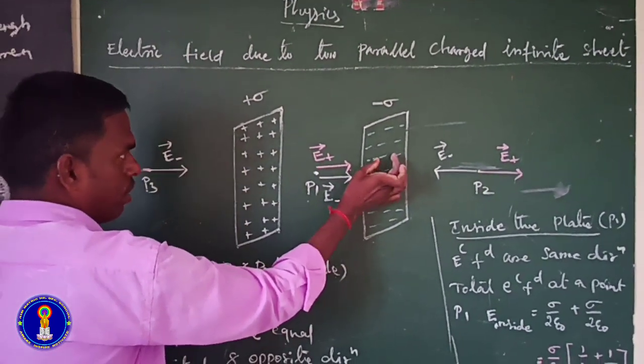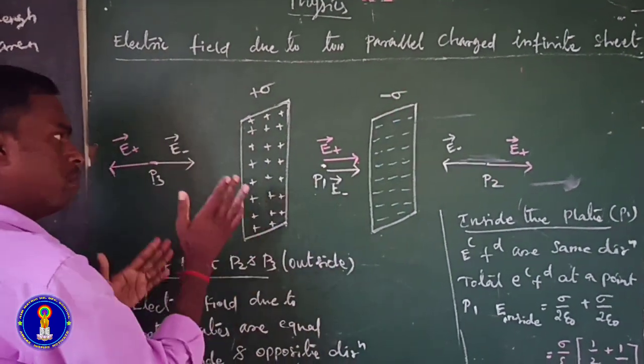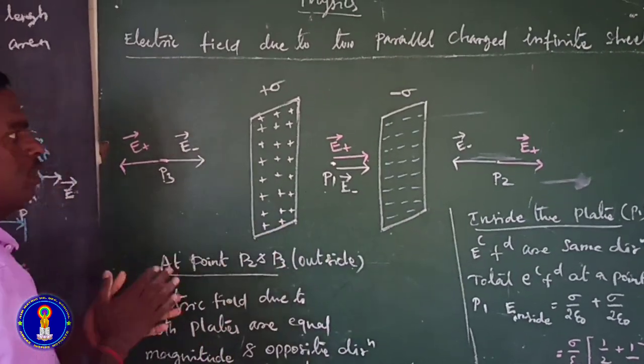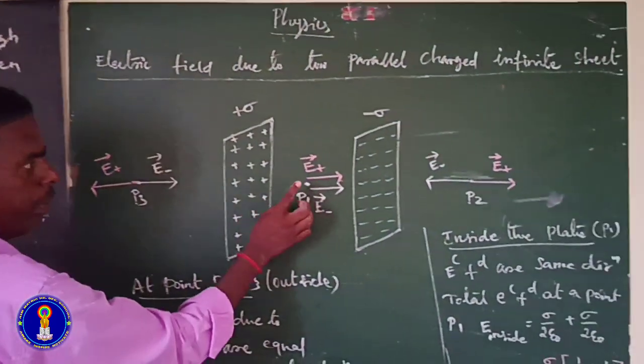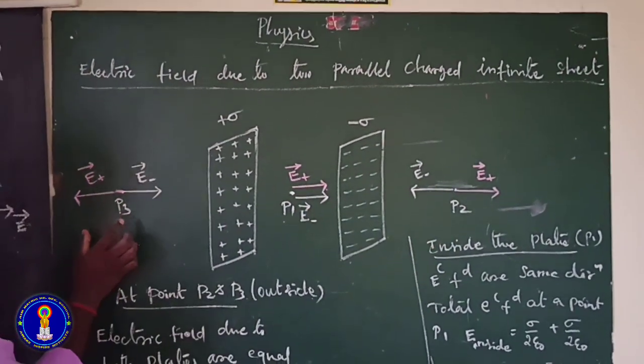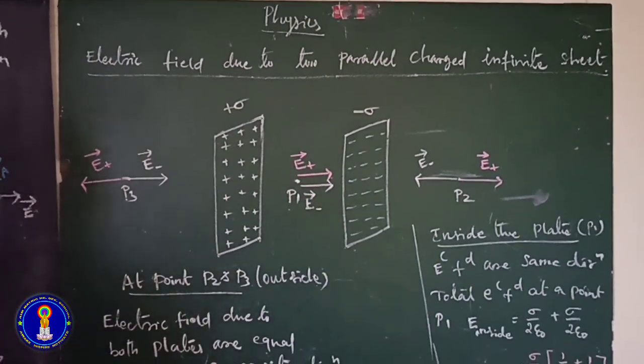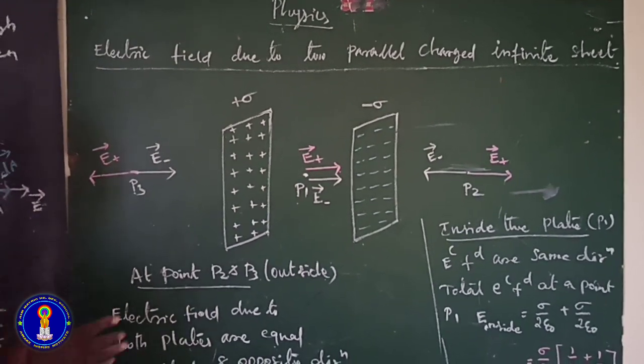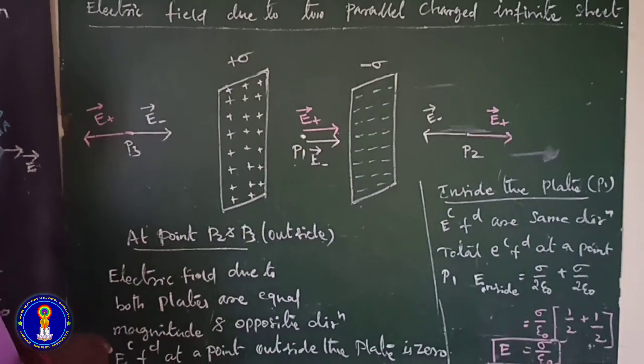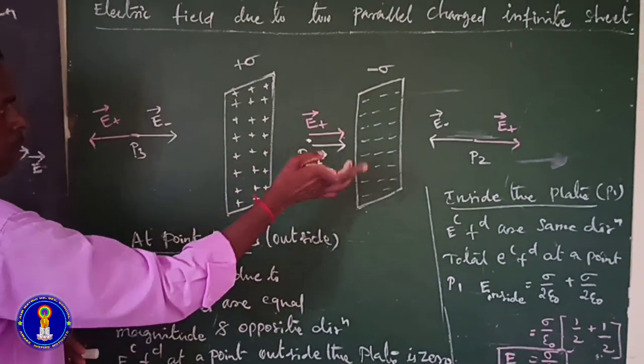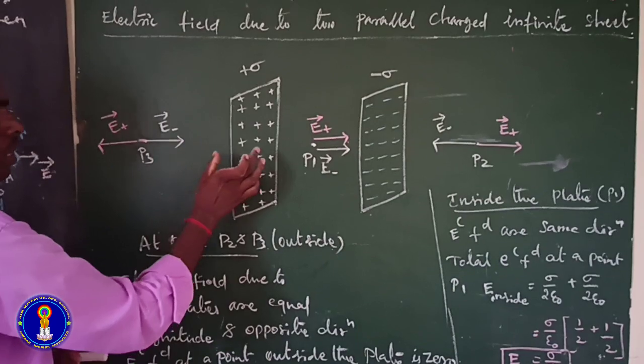Two infinite charged plane sheets whose charge density is plus sigma and minus sigma, equal magnitude but opposite sign. We'll calculate the electric field at points P1, P2, and P3 using Gauss law.